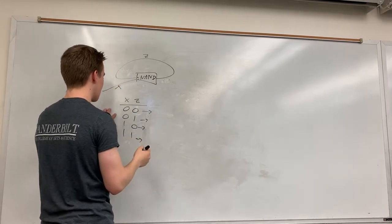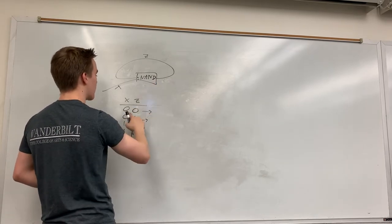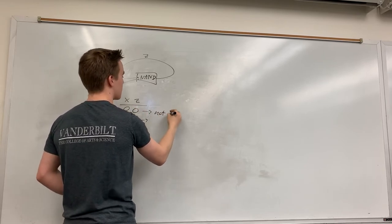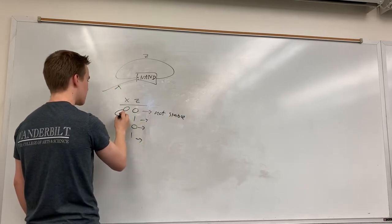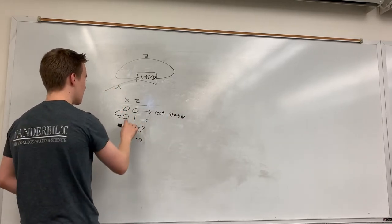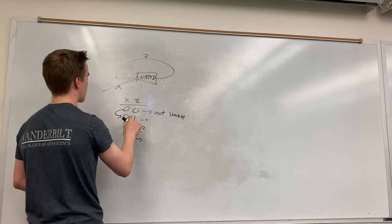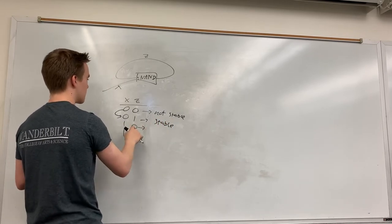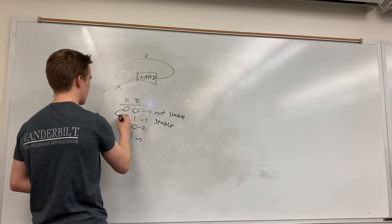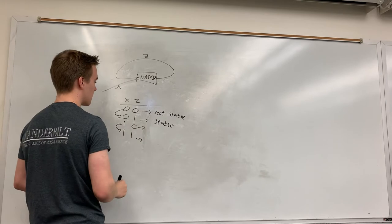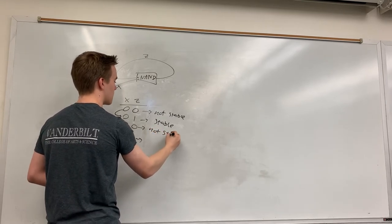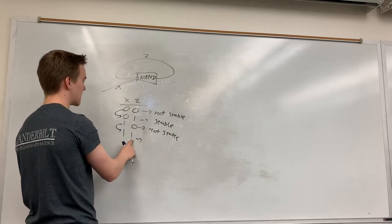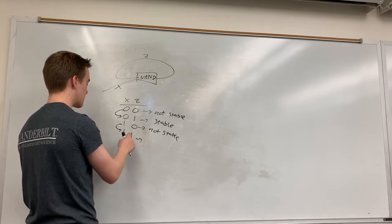Correcting the truth table: if X is zero and Z is zero, NAND outputs one, so Z changes to one — not stable. If X is zero and Z is one, NAND is one, Z stays as one — this is stable. If X is one and Z is zero, NAND is one, Z changes, so not stable. If X is one and Z is one, NAND outputs zero, so Z gets set to zero — also not stable.